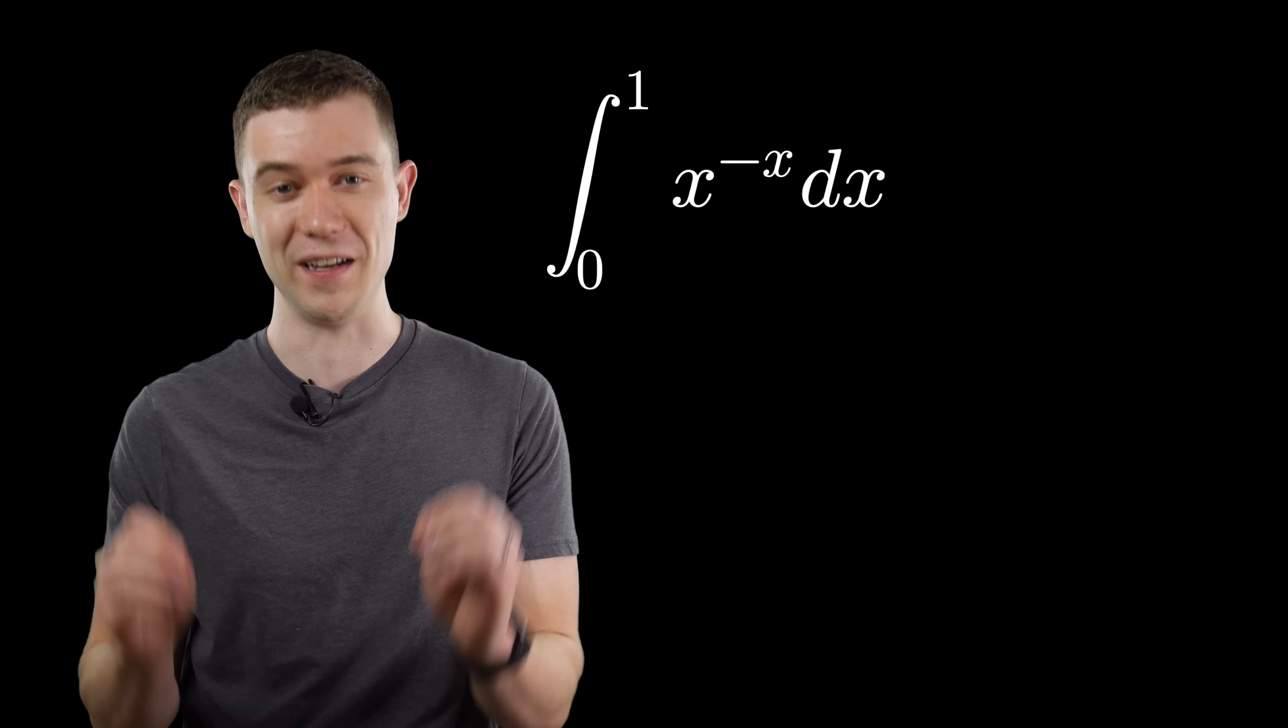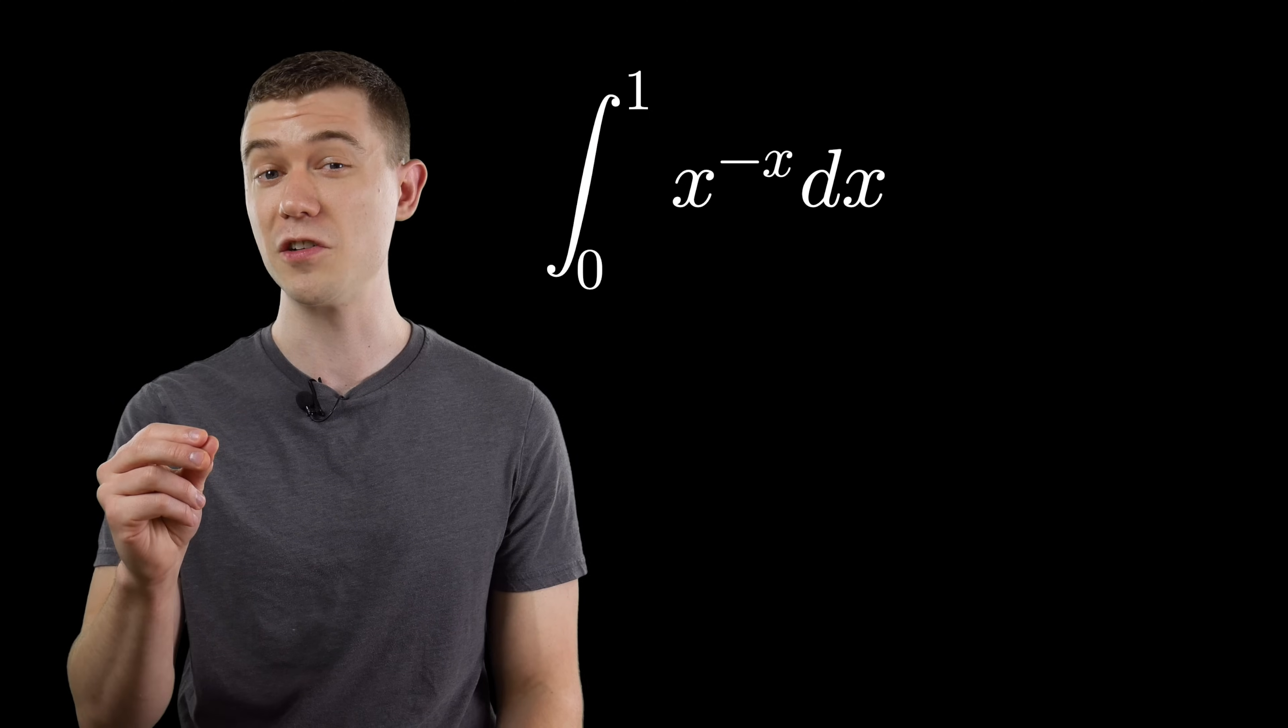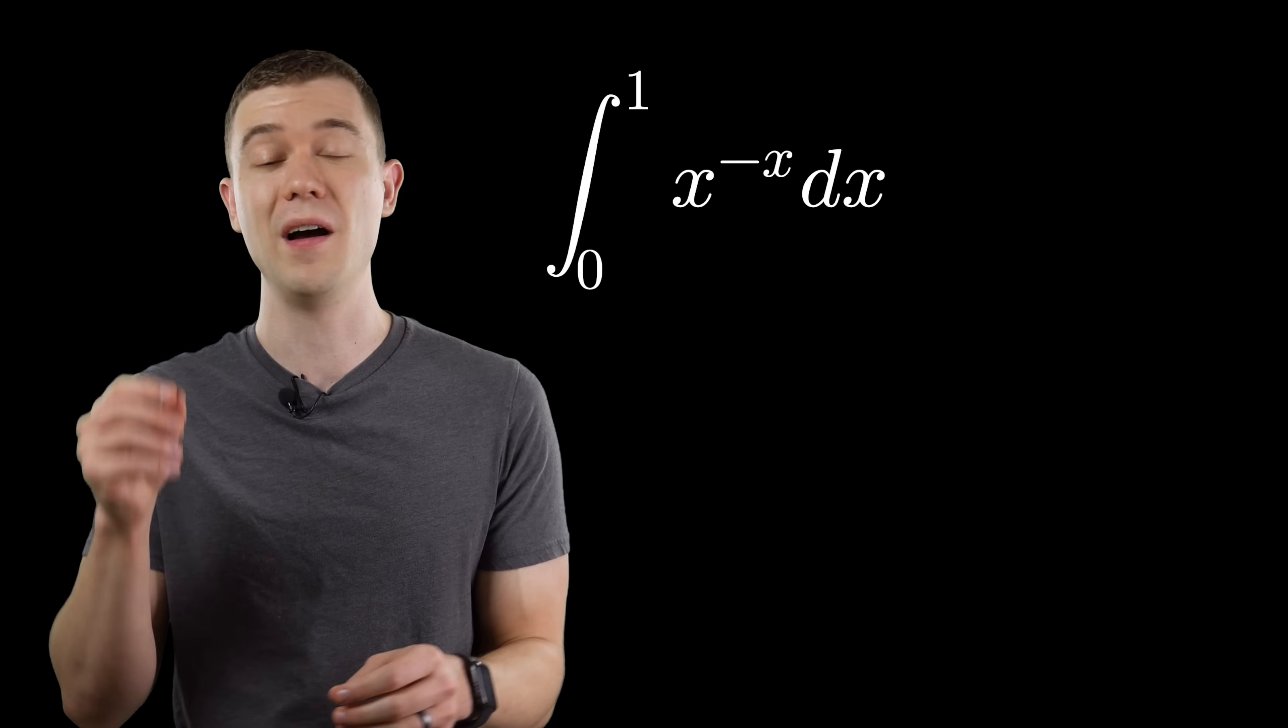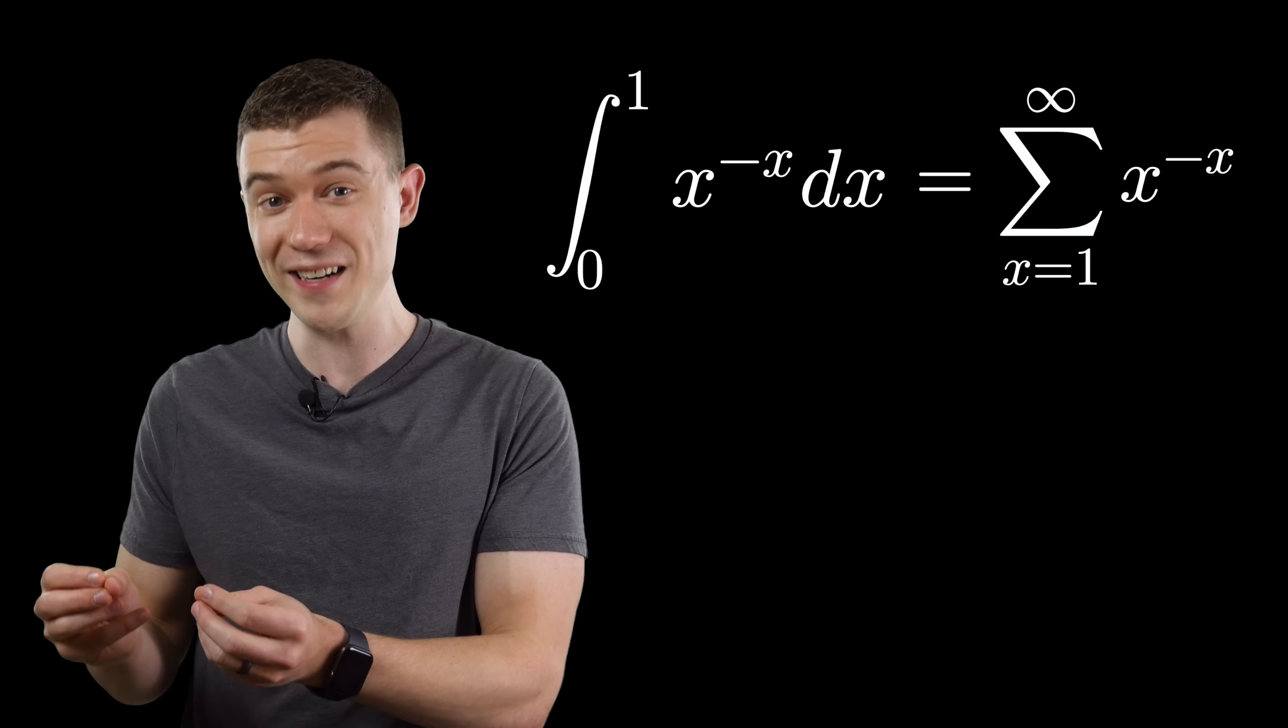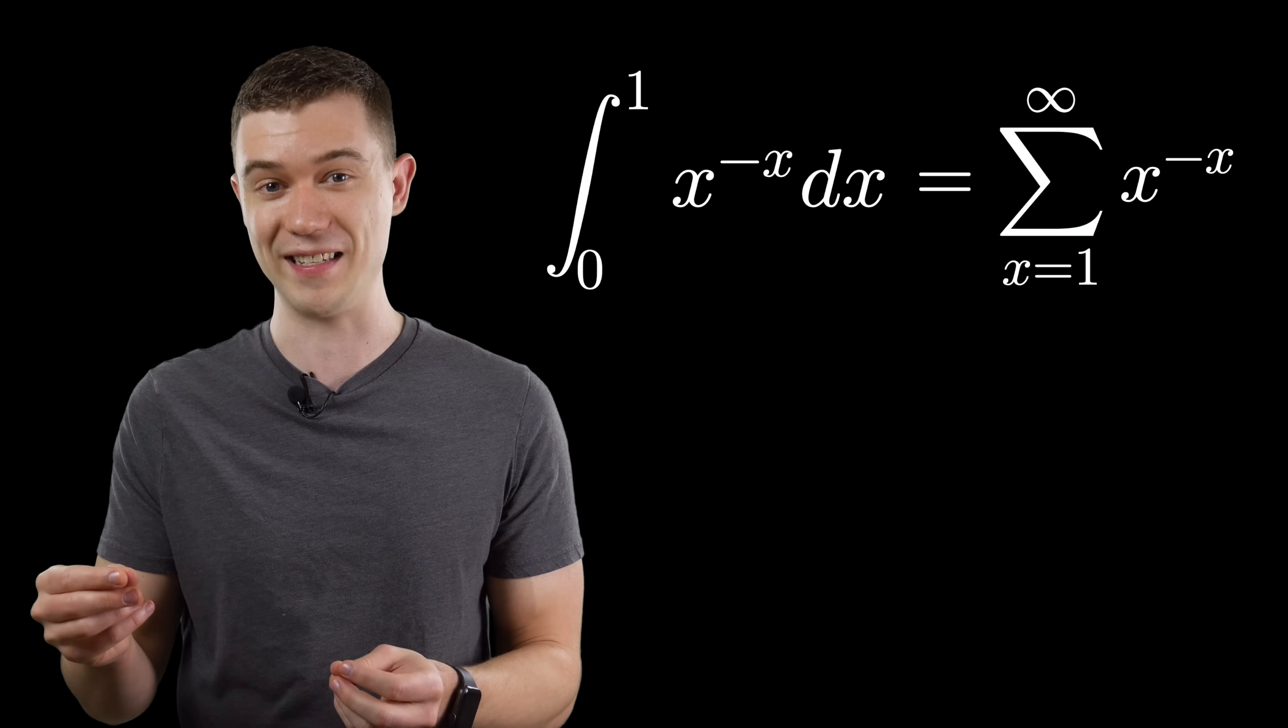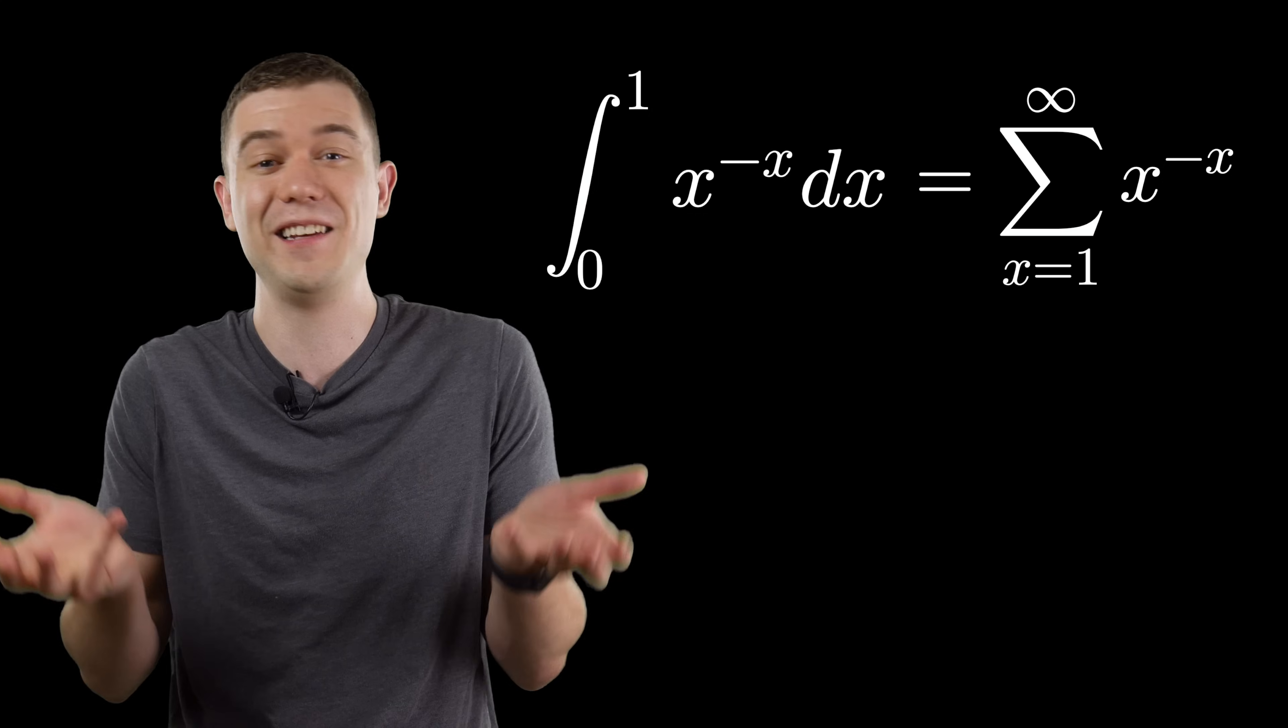Next, another integral I did cover on my channel already, but it's just too good of a nugget to leave out of here, and that's the sophomore's dream integral. If you take this definite integral, this continuous sum of x to the minus x, it evaluates to the discrete sum of x to the minus x, which is absolutely ridiculous.